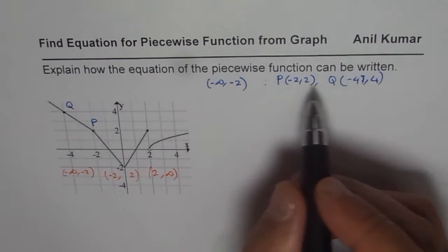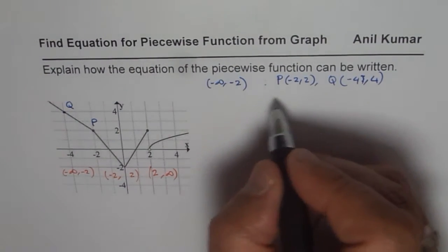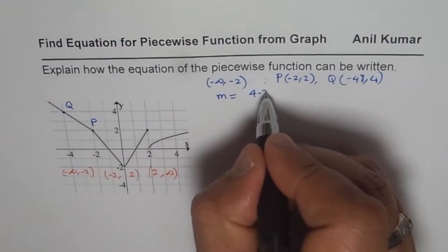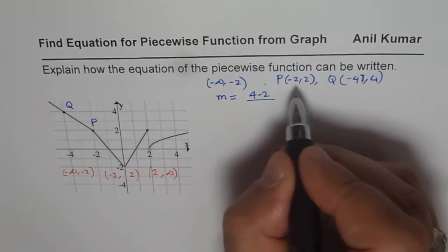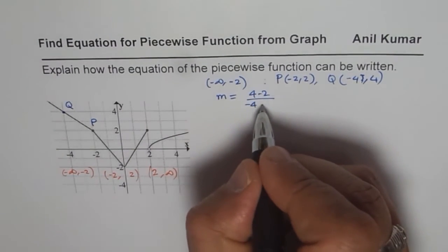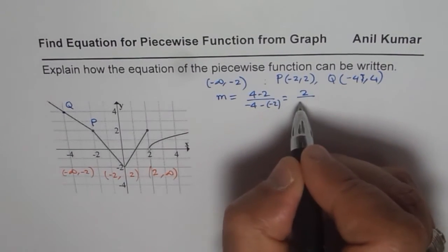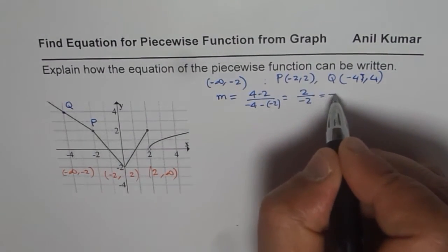With two points you can always find equation of the line. So we can find slope. So slope M equals to y2 minus y1, 4 minus 2 divided by x2 minus x1, minus 4 minus of minus 2, or 2 over minus 2, that gives us minus 1.